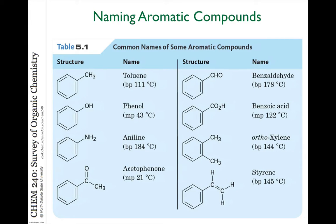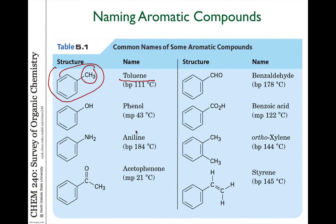As I mentioned in the previous video, there are lots of common names associated with aromatic compounds, some of which you can see here on this slide. When we use these common names for substituted benzene derivatives, keep in mind that that common name includes the substituent as part of the parent. For example, the molecule toluene includes the benzene ring and the CH3 group, so the word toluene refers to this whole thing as a parent.